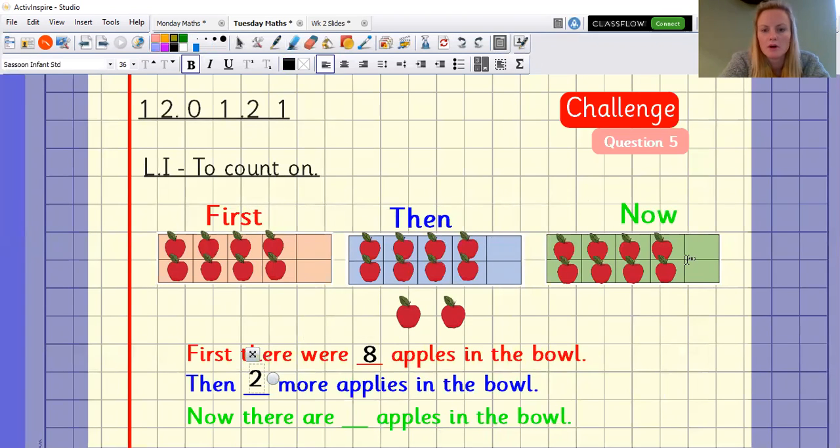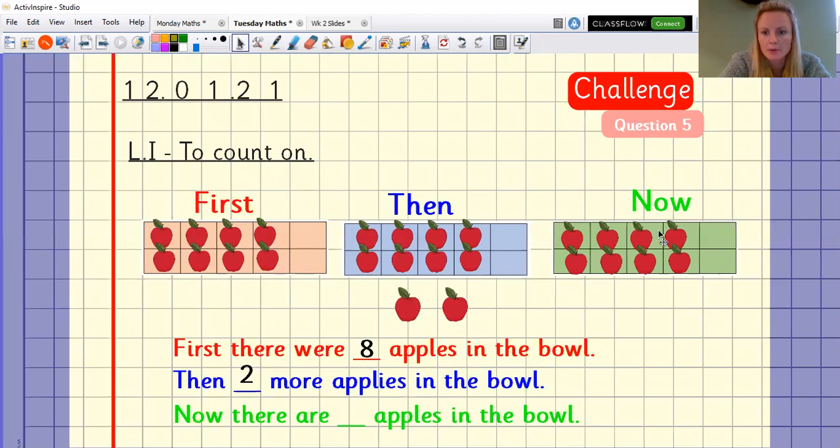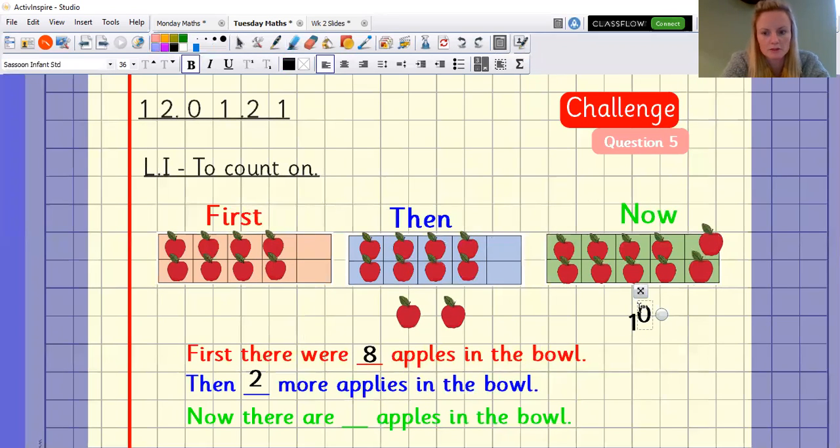Now there are, can anybody spot a mistake on Miss Brandt's display? Yes. I have forgotten to move my apples. So if you spotted my mistake, well done. Here they are. Now there are 10 apples. I hope someone managed to spot that before me. There are 10 apples.